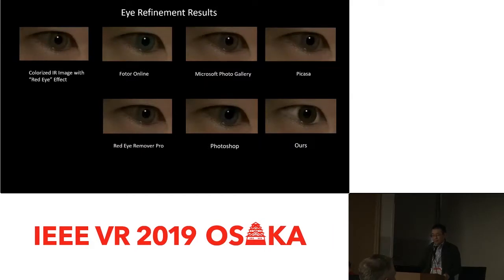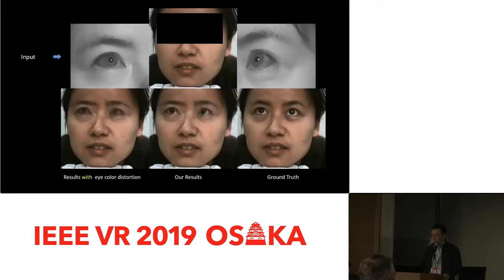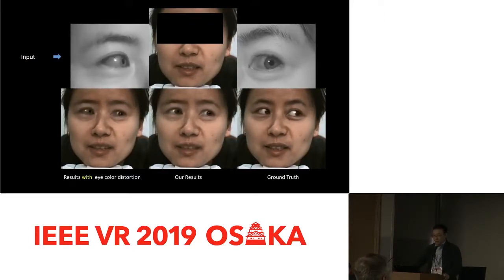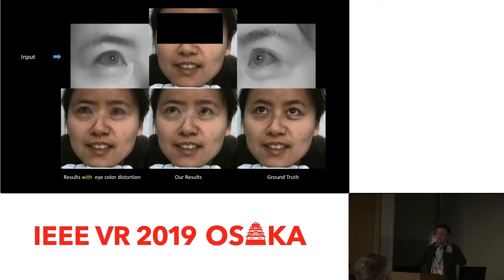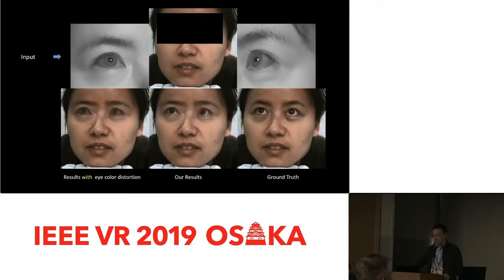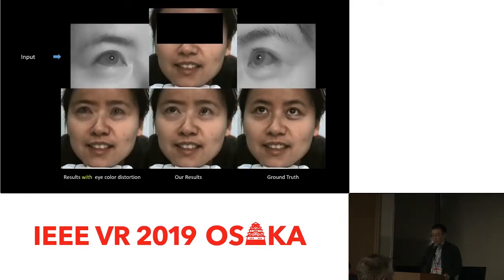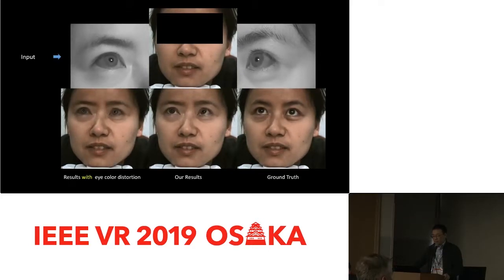Here is another result, and here I'm showing a video. This is from our simulation setup, so I can show the ground truth. The input with red-eye is on the left, our result is in the middle, and the ground truth is on the right.